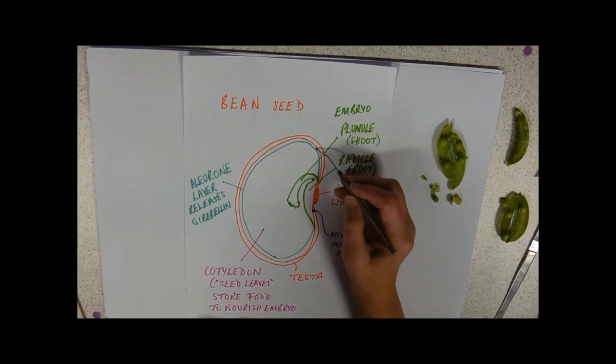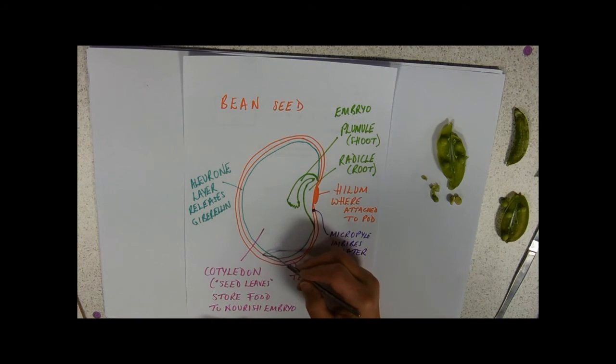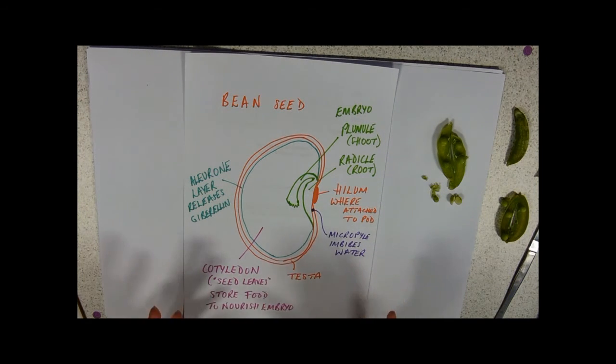Around the outside is the aleurone layer. The role of the aleurone layer is to release gibberellins. Gibberellins are a plant hormone and their role is to break that dormancy of the seed when the conditions are perfect, in terms of temperature, water availability, and oxygen availability.